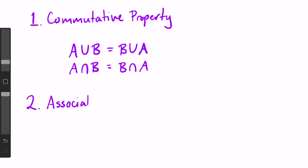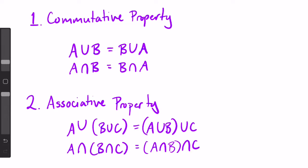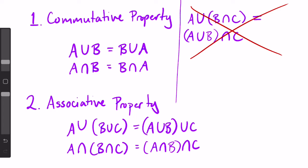The second property is the associative property which states that (A union B) union C is equal to A union (B union C) and the same thing for intersection. Note that this does not mean that A union (B intersect C) is equal to (A union B) intersect C or the other way around. You can't reassociate sets across different types of operations—that is, union and intersection in the same expression.